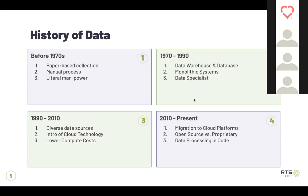Moving past the 1970s up until about 1990, you start to get a more systematic approach. There's the introduction of data warehouses and databases — the difference being that a data warehouse is a central location for all data, whereas databases can be used for a single purpose. You also have monolithic systems where companies sell you the whole end-to-end solution in one big product. And you have data specialists: people specializing in taking information from sources and building repositories so that companies can actually use the information to make decisions.